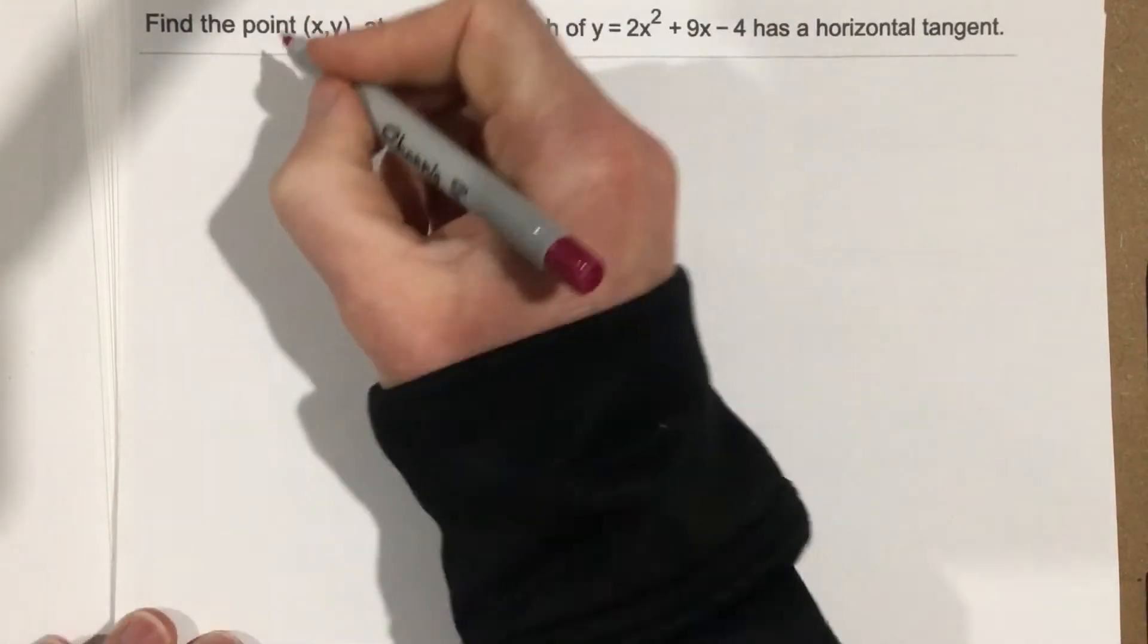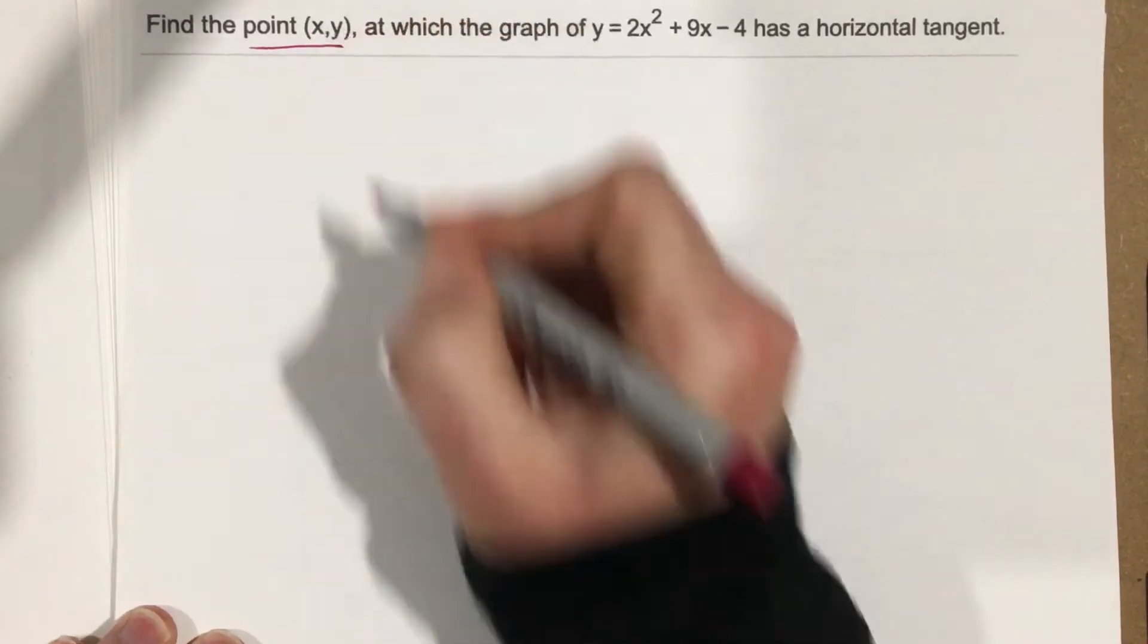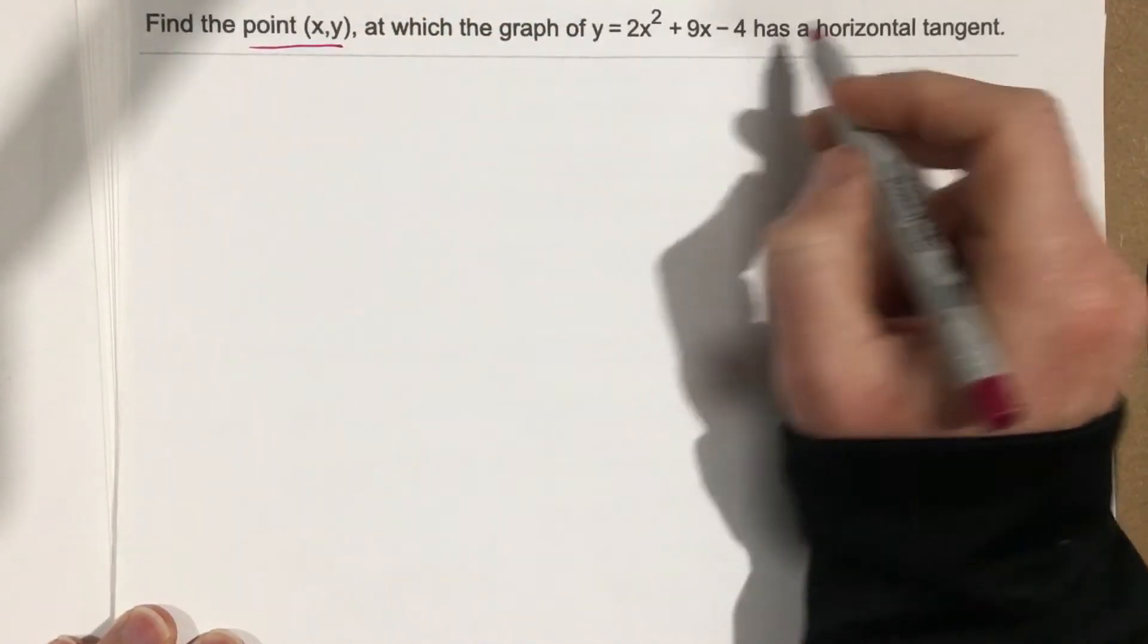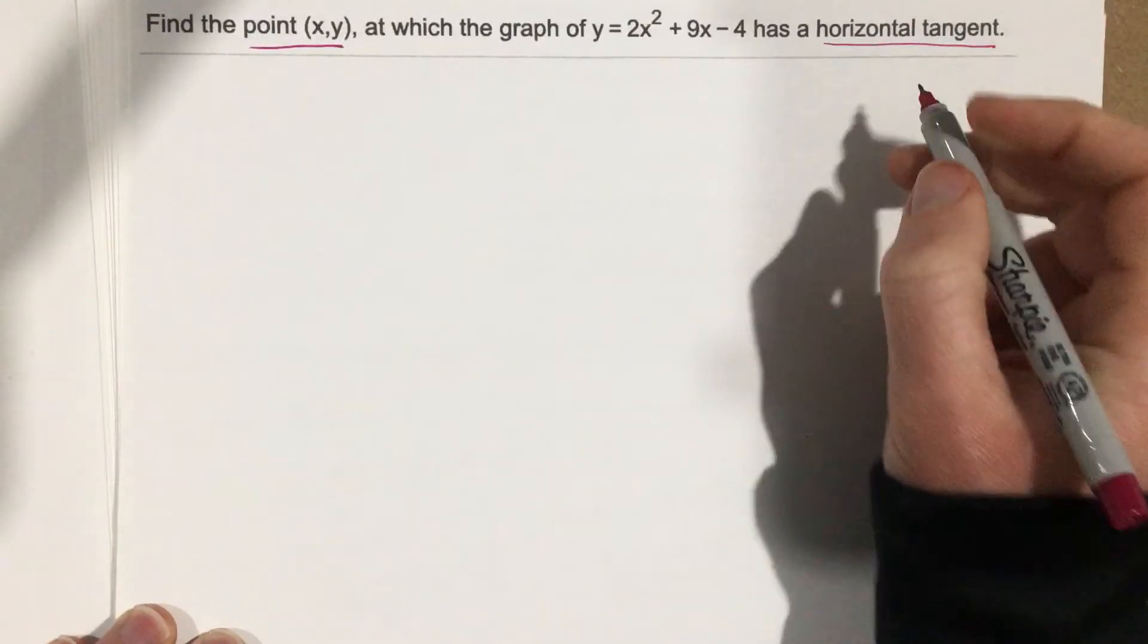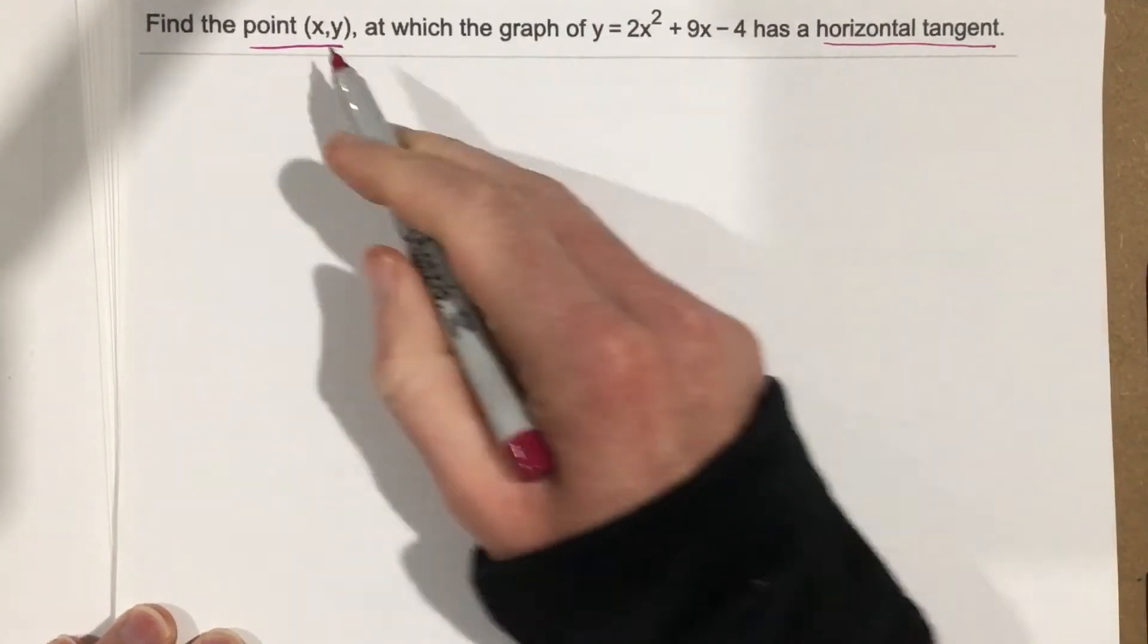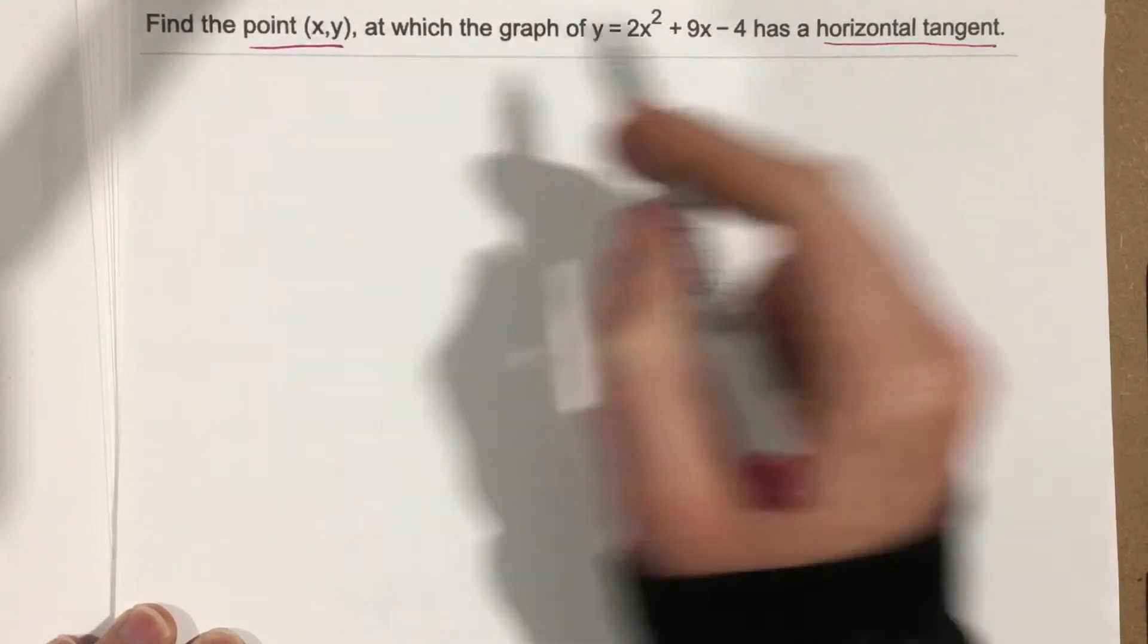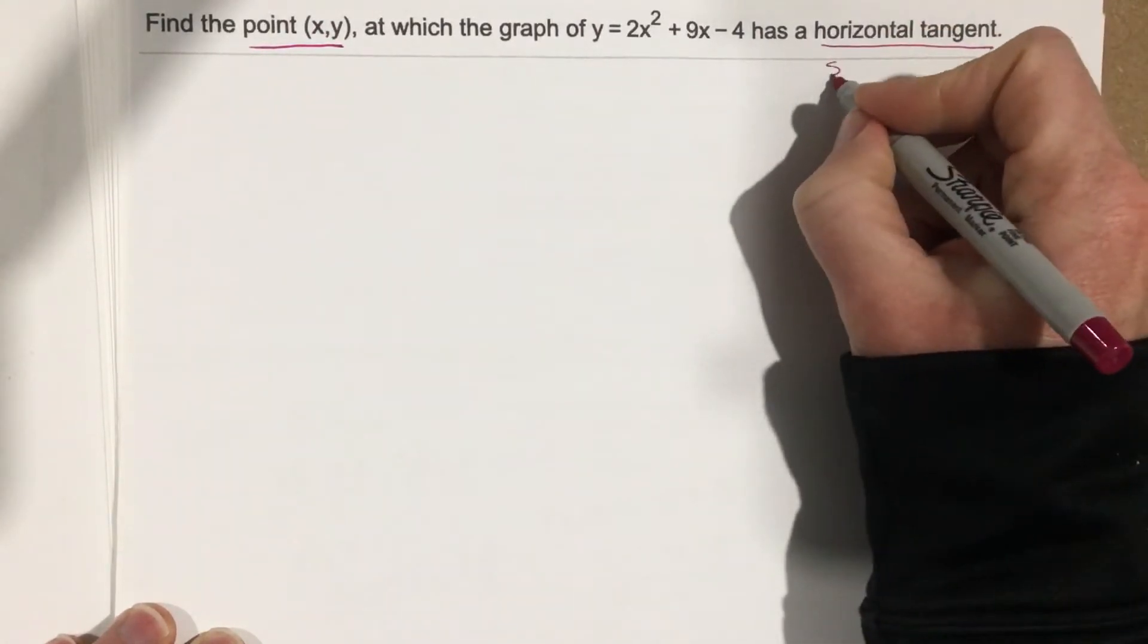So they want us to find the point, the coordinate, where this graph has a horizontal tangent. What does it mean to have a horizontal tangent? It means that at this point we're about to find, the tangent line has a slope of 0.